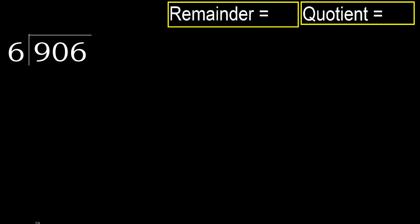906 divided by 6. 9 is not less, therefore with 9 and 6, multiply by which number is nearest — 2, 9 — but not greater.